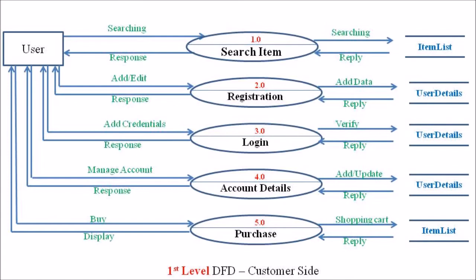The fourth process associated with the level 1 customer side is account details. This holds the user's personal details including name, email address, phone numbers, delivery and dispatch addresses. The user can view as well as update their details — such as changing a phone number, email address, or shipment address. The account details process is also linked with the user detail data store.